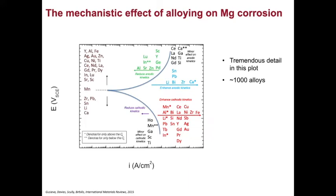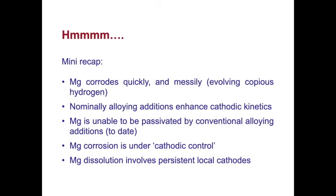When making this plot, the most telling thing was that there is essentially no elements that studied to date that could restrict cathodic kinetics upon magnesium, suggesting what we now know is as true in the last few years is that magnesium corrosion is under cathodic control, and the cathodic reaction can proceed freely in water at the potentials of magnesium alloys. So, mini recap here, and cutting a lot of material out, and of course, I'll stop the doom and gloom after this, and we've skipped about 50 papers worth of electrochemistry to get to these. Magnesium corrodes quickly and messily, evolving copious hydrogen. Nominally alloying additions enhance cathodic kinetics. Magnesium is unable to be passivated by conventional alloying additions to date. Magnesium is under cathodic control, and magnesium dissolution involves persistent local cathodes.